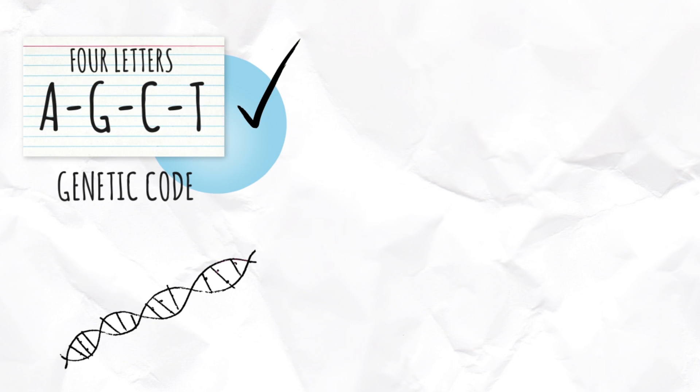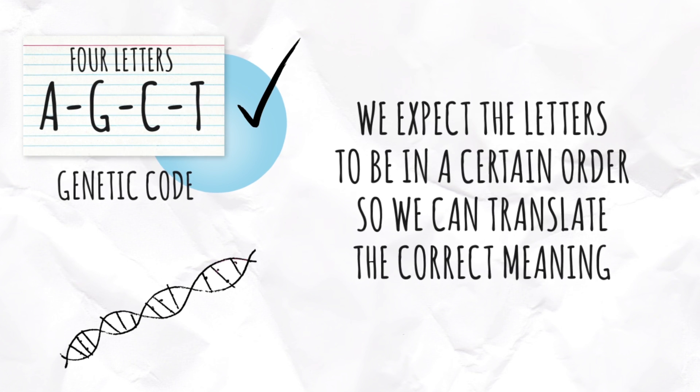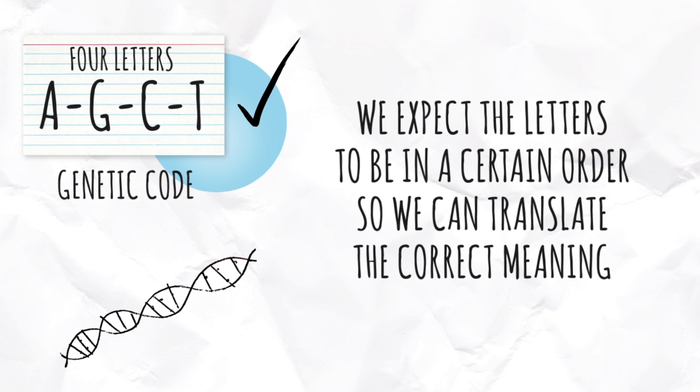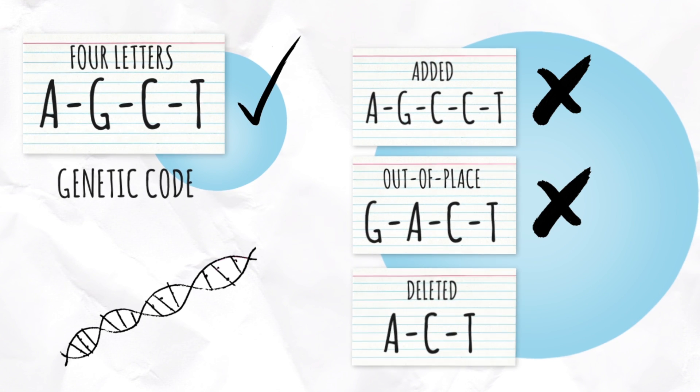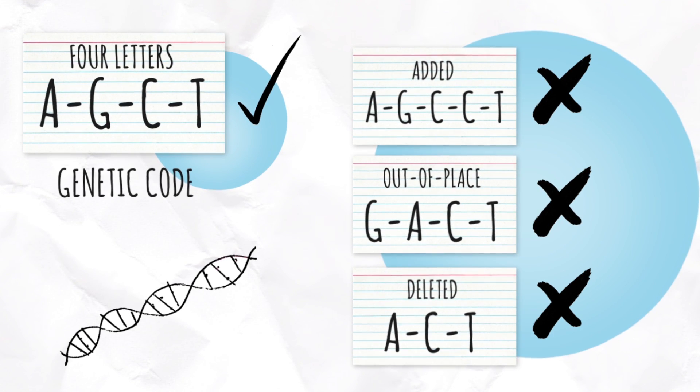In our written language, we expect the letters in words to be in a certain order for our brains to translate the correct meaning. If a letter is added, out of place, or deleted, the word itself may not be understood.